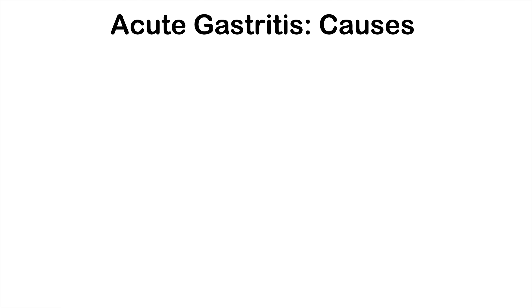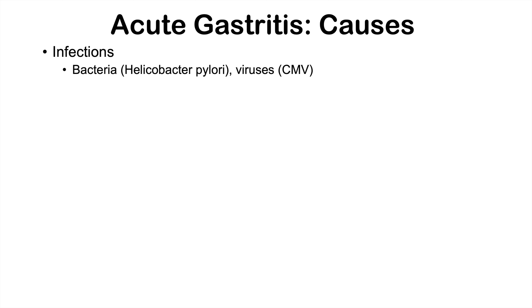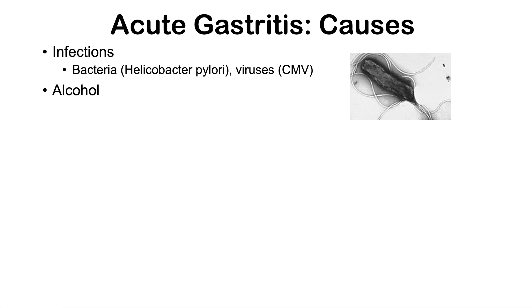One cause of acute gastritis is infections. These can be bacterial, like Helicobacter pylori, which is actually the most common cause of acute gastritis — H. pylori associated gastritis is the most common form. Some viruses can also lead to acute gastritis, including cytomegalovirus, although this is very rare. Alcohol is another cause, as it causes irritation and inflammation of the stomach lining.